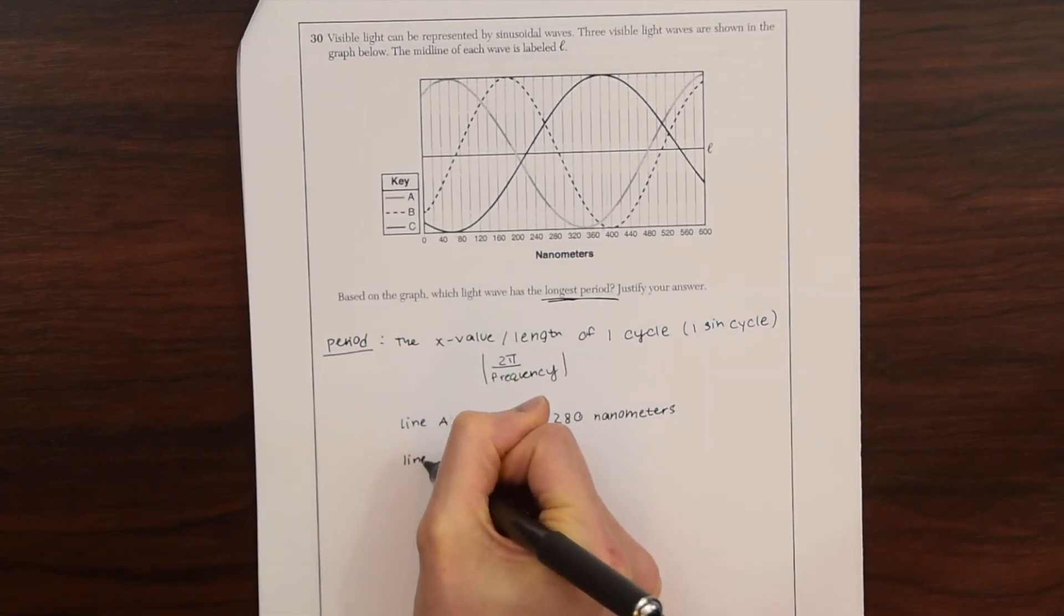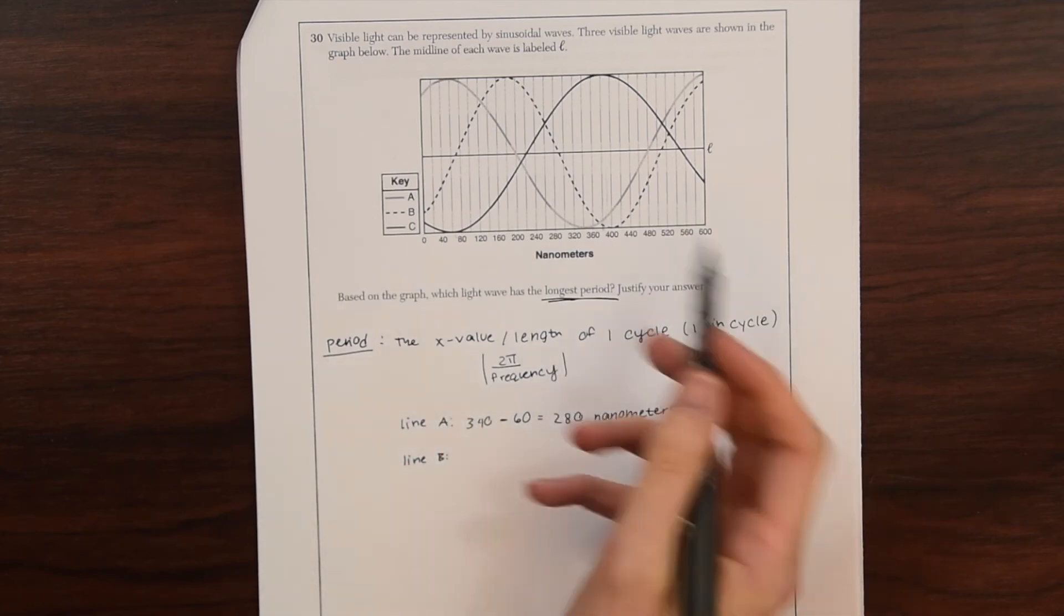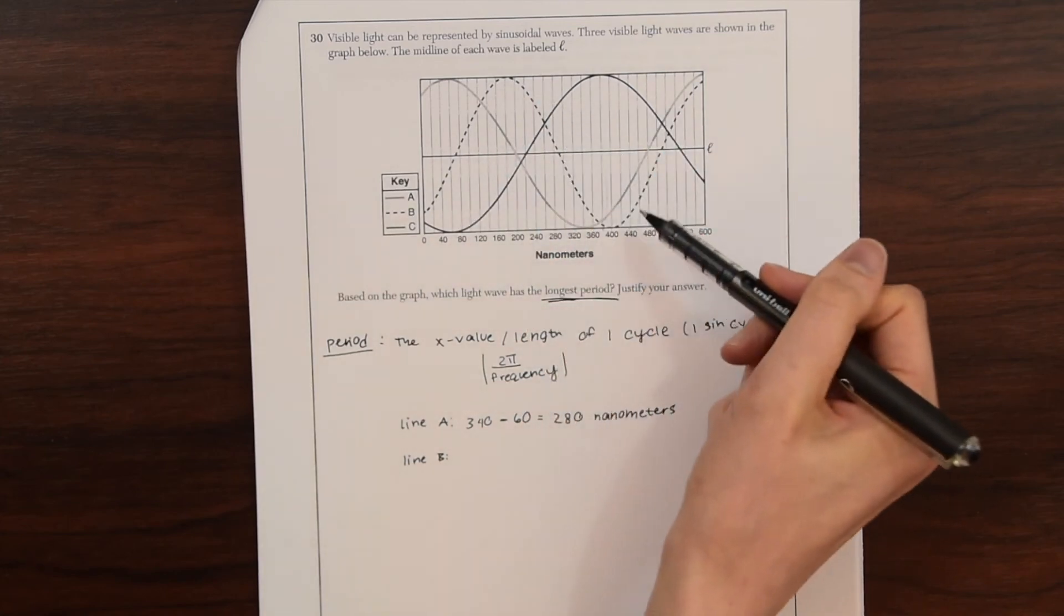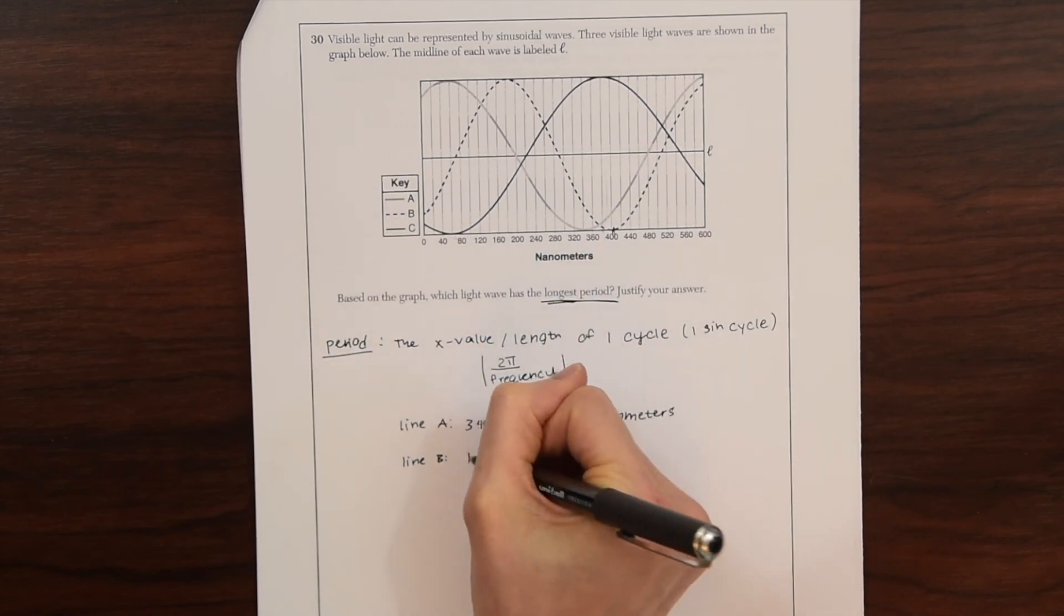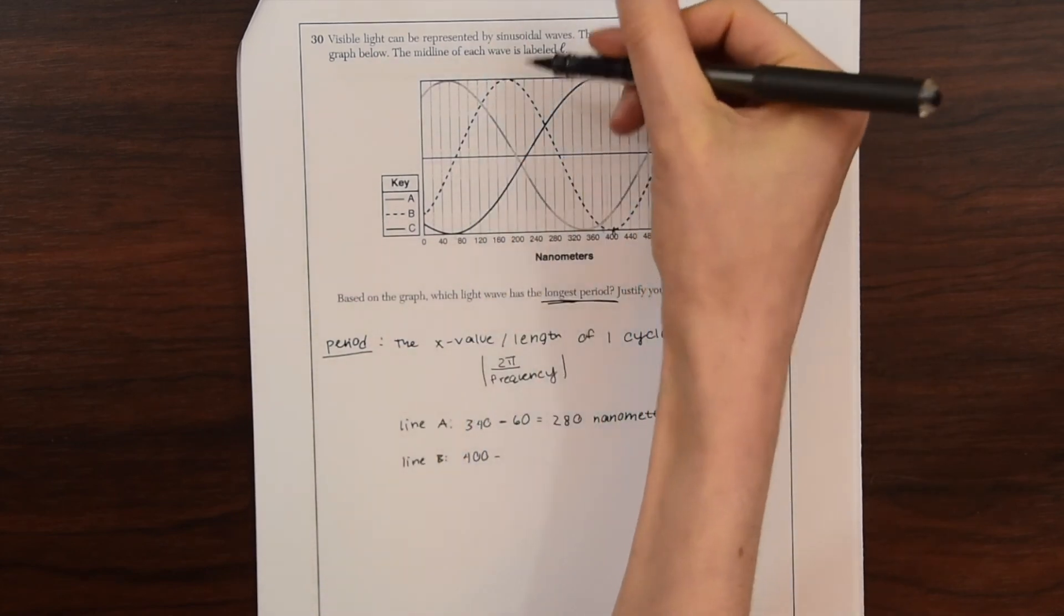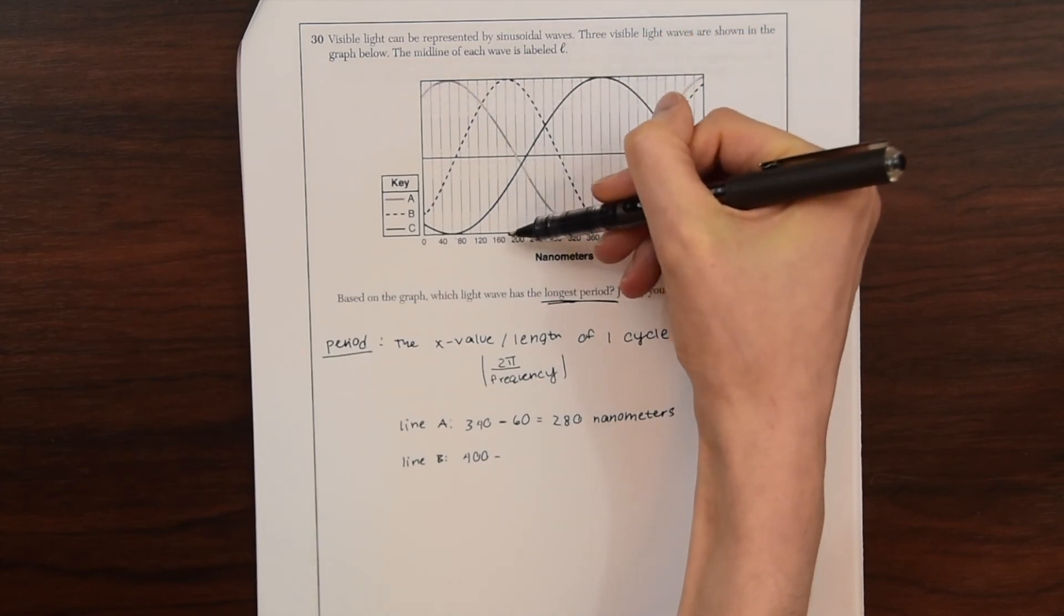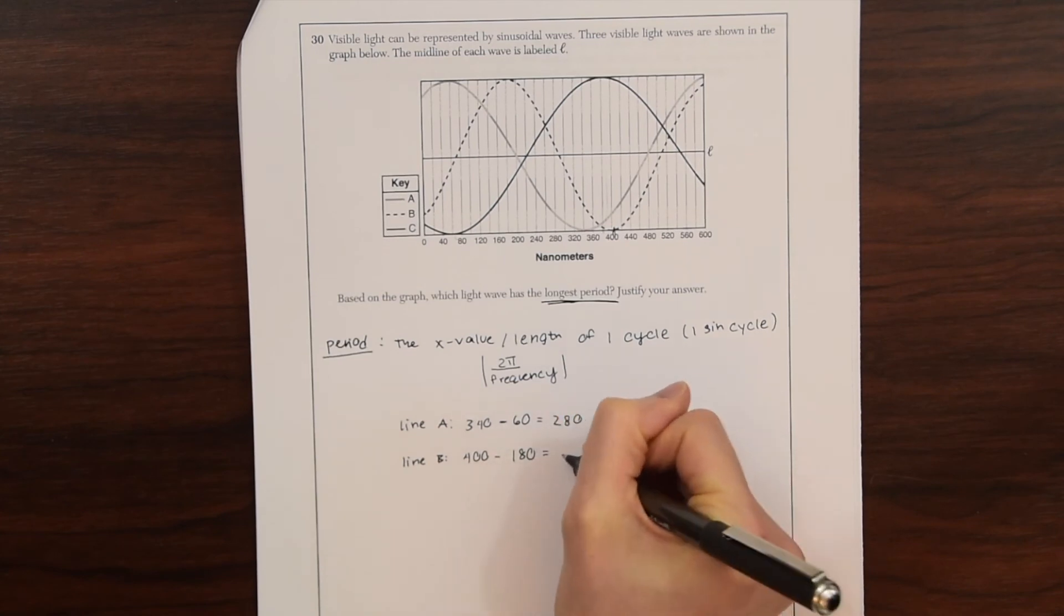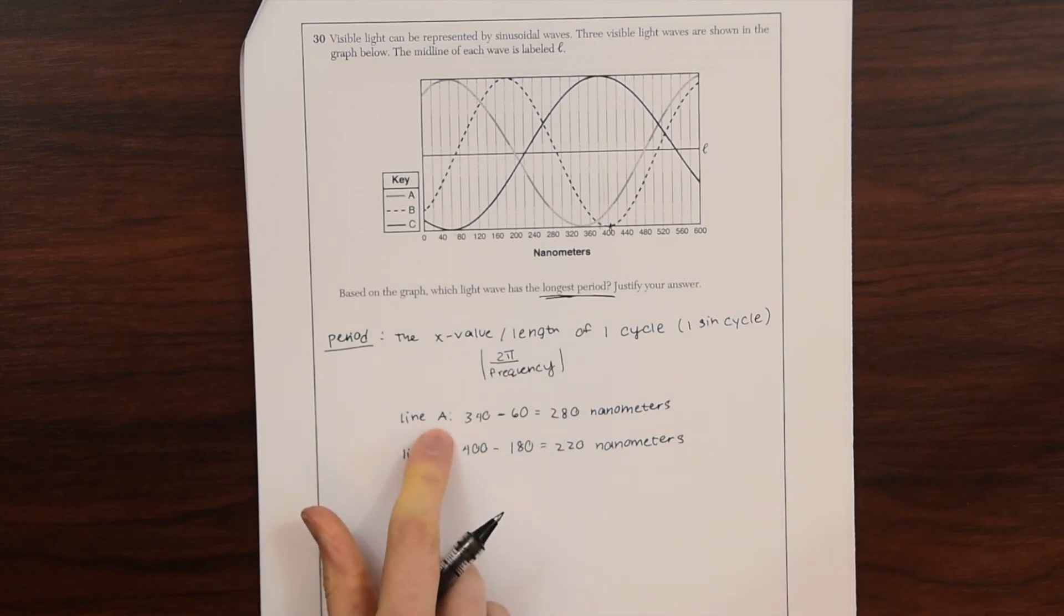So let's try line B. What we're doing is we want to find the line with the biggest distance. So we're going to find the distance between lines A and line B and line C, and then we're going to compare the three. So up next we have line B, this dotted line here. So up here we have 400 minus the maximum point over here, which looks like it's 180. Subtract these and we get 220. So already line A has a longer period than line B.